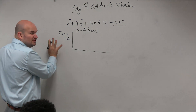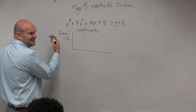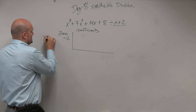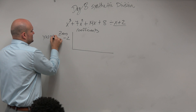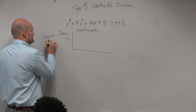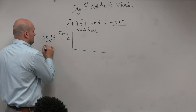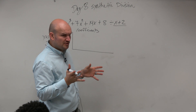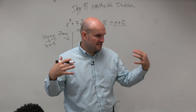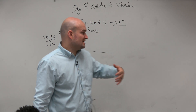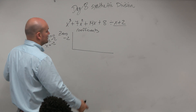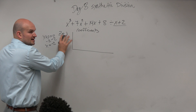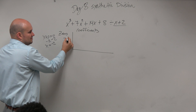If you get confused and you're not sure what the zero is, just set x plus 2 equal to 0 and solve. Some of the more complicated ones can be confusing, so just take your divisor and set it equal to zero.